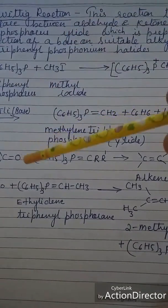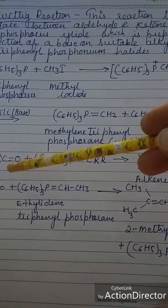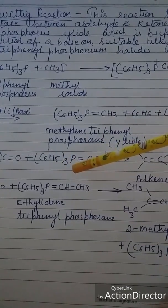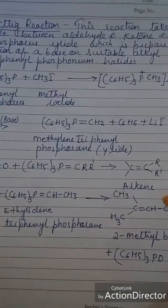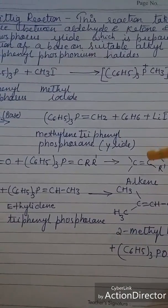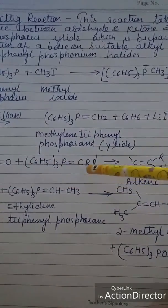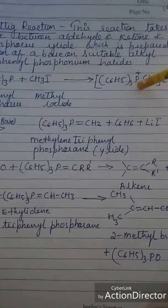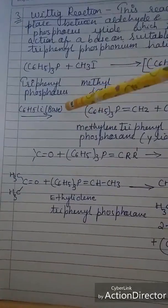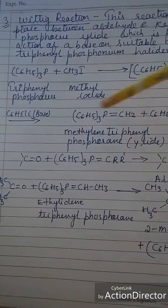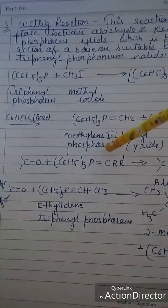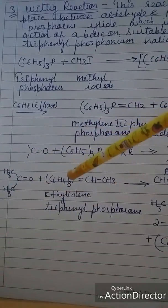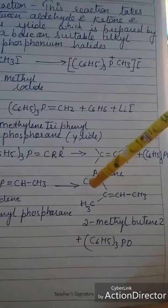Now let us talk about the Wittig reaction. This reaction takes place between an aldehyde or ketone and methylene triphenylphosphorane, resulting in the formation of the corresponding alkene. The phosphorane reagent is formed by reacting triphenylphosphorus with methyl iodide to give an intermediate, which in the presence of base gives methylene triphenylphosphorane. For example, acetone reacts with ethylidene triphenylphosphorane to give the corresponding alkene.